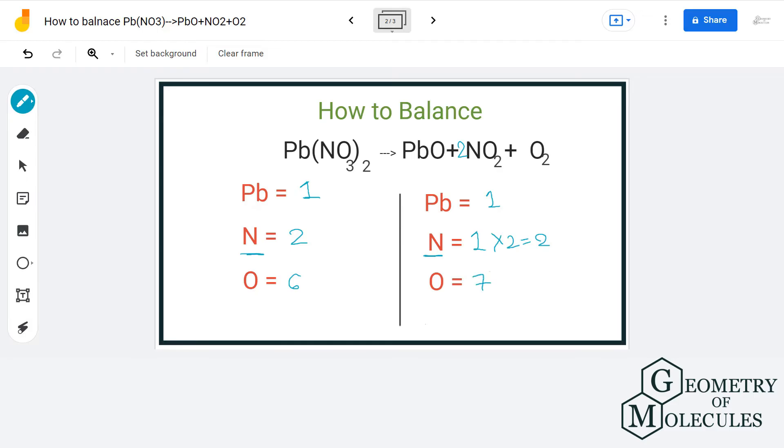We only have six on the reactant side. So let us try and balance oxygen out by adding two in front of lead nitrate.